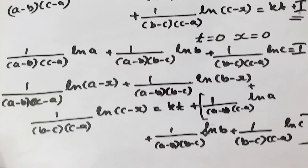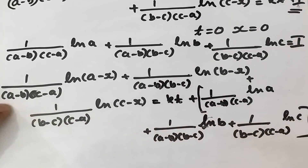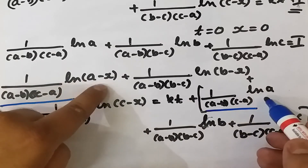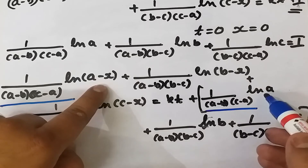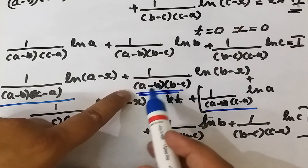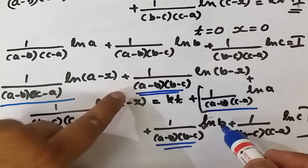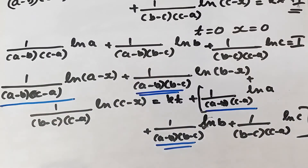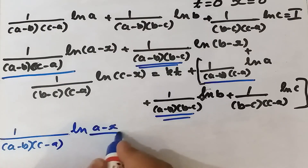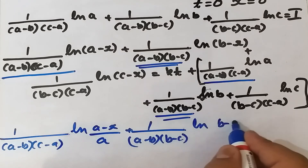Taking all terms to the left-hand side and grouping, we apply the log subtraction rule. The first group gives 1 upon (a minus b)(c minus a) · ln[(a minus x)/a], the second gives 1 upon (a minus b)(b minus c) · ln[(b minus x)/b], and the third gives 1 upon (b minus c)(c minus a) · ln[(c minus x)/c], all equal to kt.